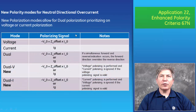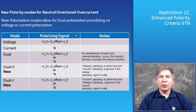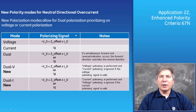Application 22: Enhanced Polarity Criteria for Neutral Directional Overcurrent Element 67N. Two new polarizing methods have been added to improve protection selectivity. Neutral directional overcurrent elements depend on zero sequence voltage V0 or ground current for polarization, with three existing methods: current, voltage, or dual. Two new polarization options have been added: Dual V, which gives priority to zero sequence voltage but uses ground current if no zero sequence voltage is present; and Dual I, which gives priority to ground current but uses zero sequence voltage if no ground current is present. If neither is present, the element does not provide directionality.